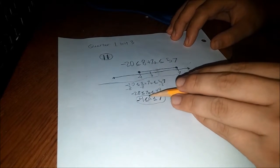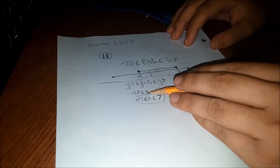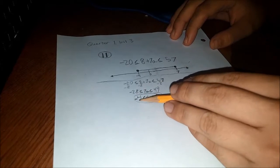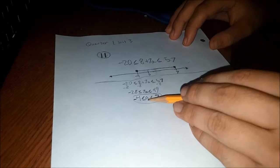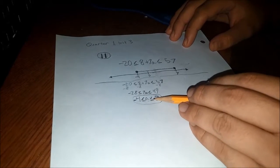Once that's done, we have to divide the 7 from the 7A from both sides. This gives us the value of -4 and 7. The answer is -4 is less than or equal to A, which is less than or equal to 7.